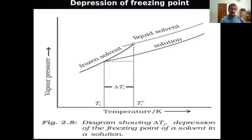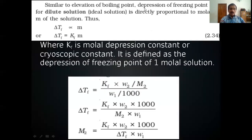The difference ΔT_f is a colligative property. From experiments, depression of freezing point is directly proportional to molality: ΔT_f = K_f × m, where K_f is the molal depression constant or cryoscopic constant. When M equals 1, K_f equals ΔT_f — meaning K_f is the depression of freezing point of a one molal solution.